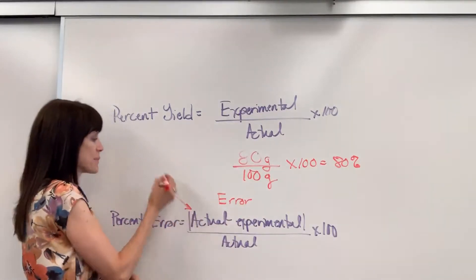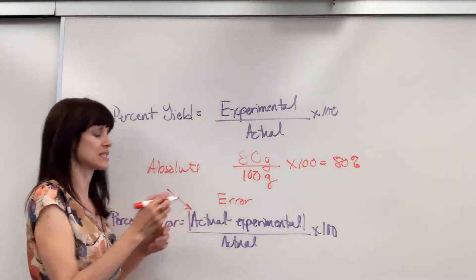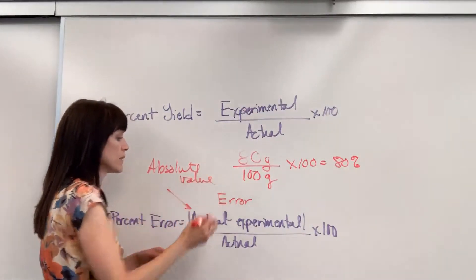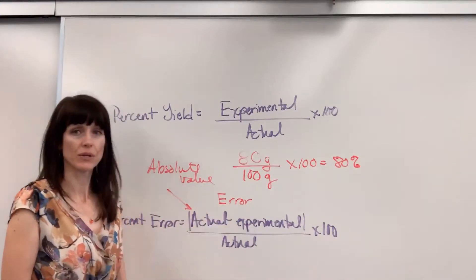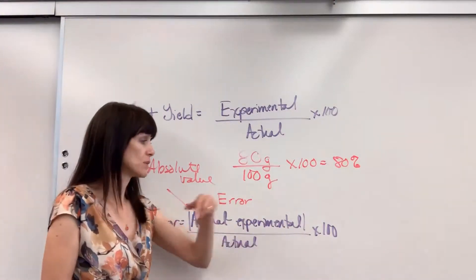Also notice, absolute value. So we're always going to have a positive value, that you're going to do absolute value here. So actual minus experimental divided by actual times 100.